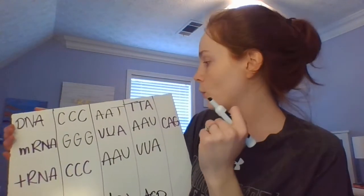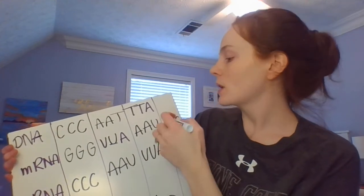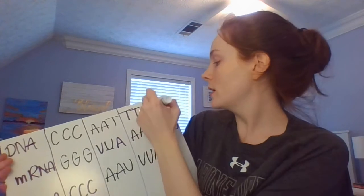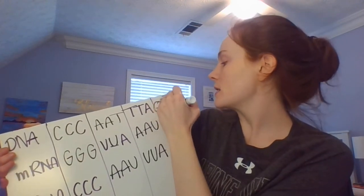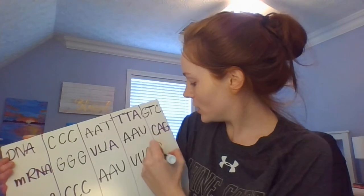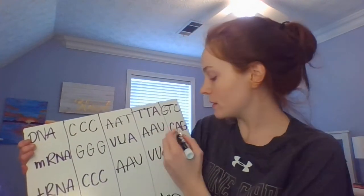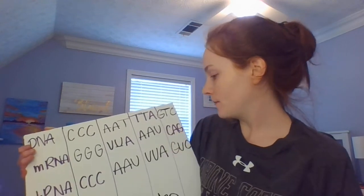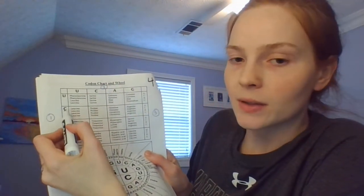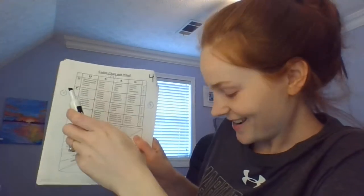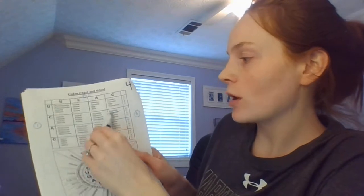For the last column, we have mRNA codon CAG. Going up to DNA: G pairs with C, T pairs with A, C pairs with G — and remember you have T's in DNA. Then working down to tRNA: C pairs with G, A pairs with U since this is RNA, and G pairs with C. For the amino acid, use mRNA codon CAG. First base C, second base A — somewhere in this box — last base G, so it is histidine — HIS.